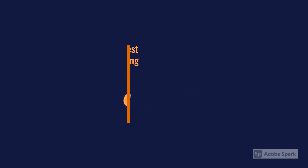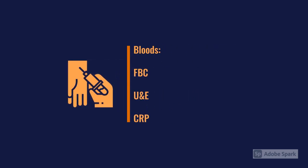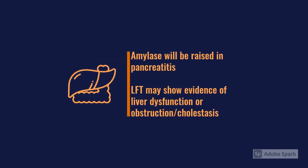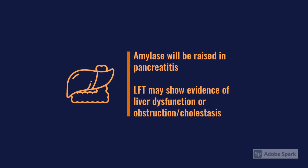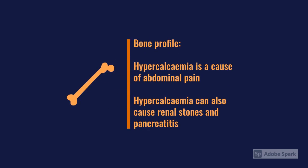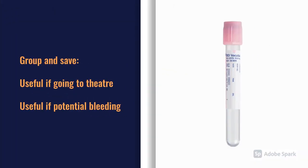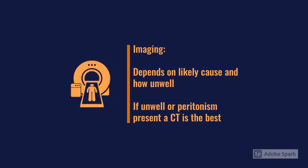Blood tests should include a routine set: full blood count, U&Es, CRP. In the context of abdominal pain, also check amylase — helpful for pancreatitis — and LFTs for biliary causes. A bone profile is helpful as hypercalcaemia is a cause of abdominal pain and a risk factor for renal stones and pancreatitis. A group and save should be taken early, as a proportion of these patients are likely to go to theatre.